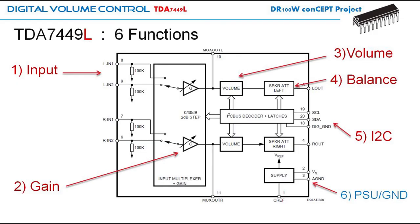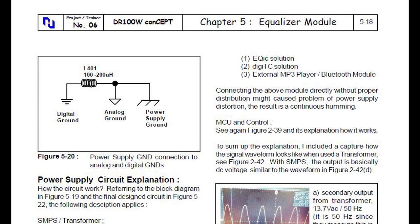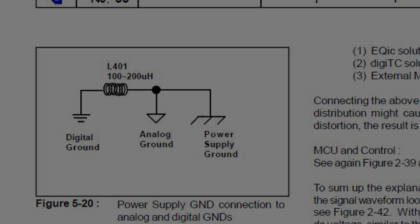We will only discuss the first five blocks in relation to the microcontroller and how to enable the functions. The sixth block — the PSU and grounding system — has been discussed in the DR100 equalizer and tone control module. This section is quite important for minimizing noise in a hybrid analog and digital system, the so-called analog heart, digital brain.